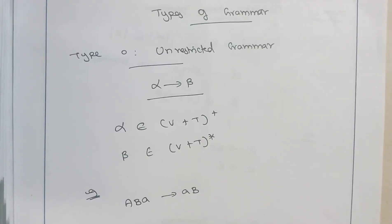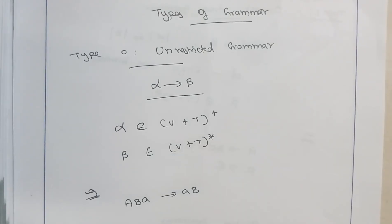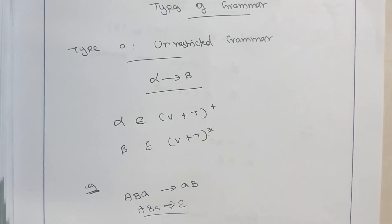Beta is made up of a variable or a terminal to the power star, meaning it accepts either a null string, a variable, a terminal, or any combination of variable and terminal. For example, the production might be a combination of a variable and terminal on both sides, and it also accepts empty productions — something that tends to empty is also allowed in case of an unrestricted grammar.